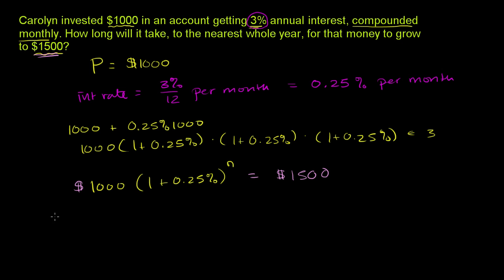Let me just rewrite it. We have 1,000 times, let's see, 0.25% is the same thing as 0.00, we're going to have to move the decimal two spaces to the left, 0.0025. So this is going to be 1.0025 to the n is equal to $1,500.